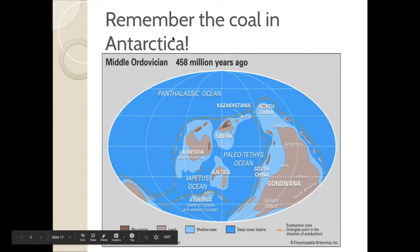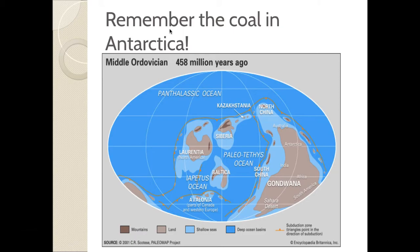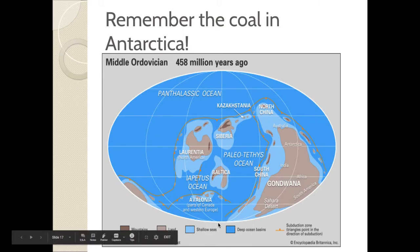Here's a quick continental drift review from last unit — the coal in Antarctica. Antarctica has coal in it, and Alfred Wegener knew that if there was coal there, there used to be plants. If there used to be plants, it used to be warmer, which means Antarctica was not always at the South Pole — it must have been somewhere else. That's how he knew the continents had moved.